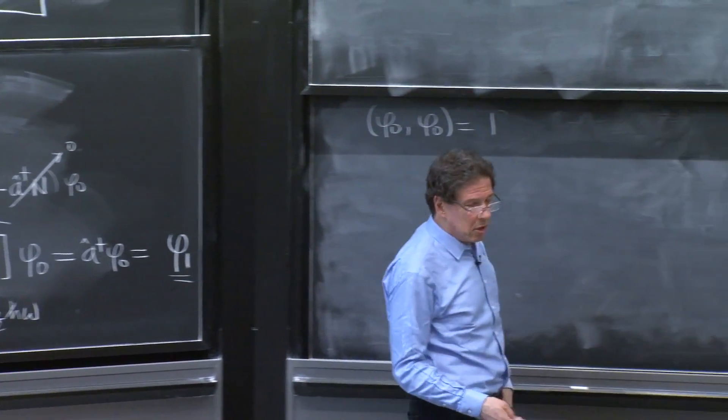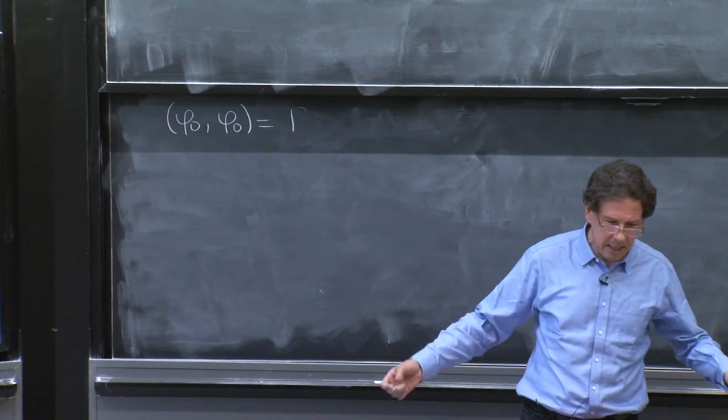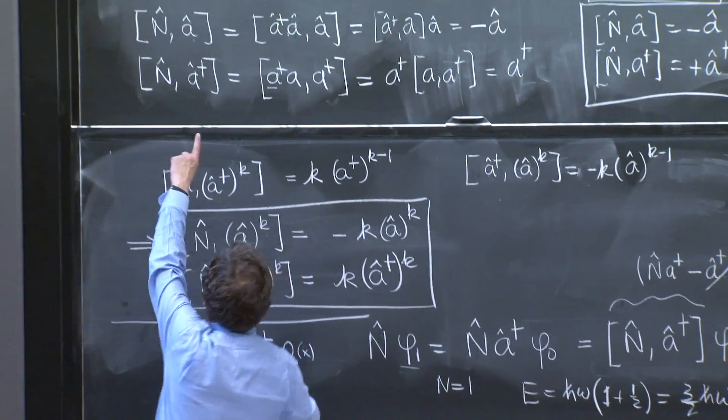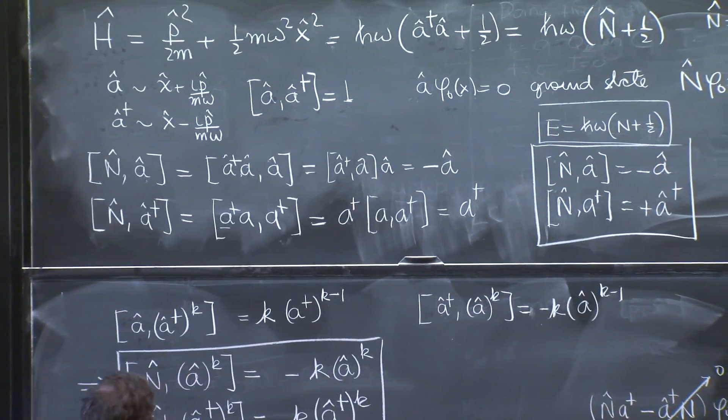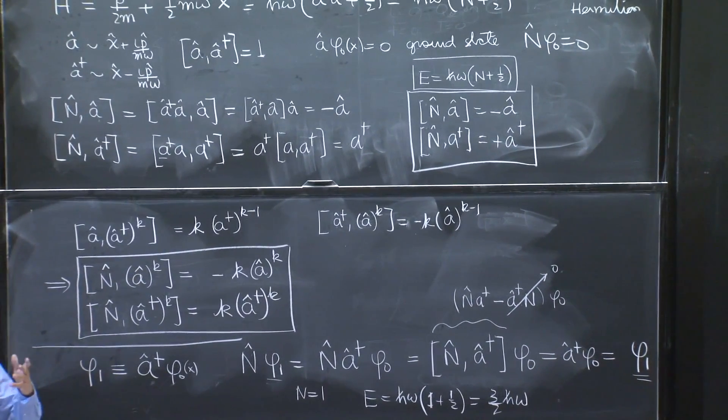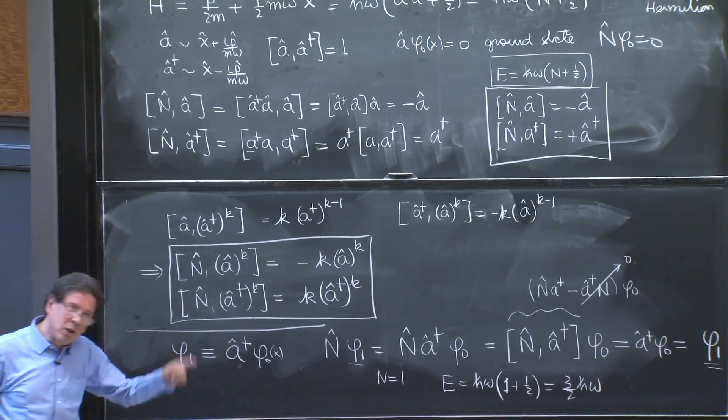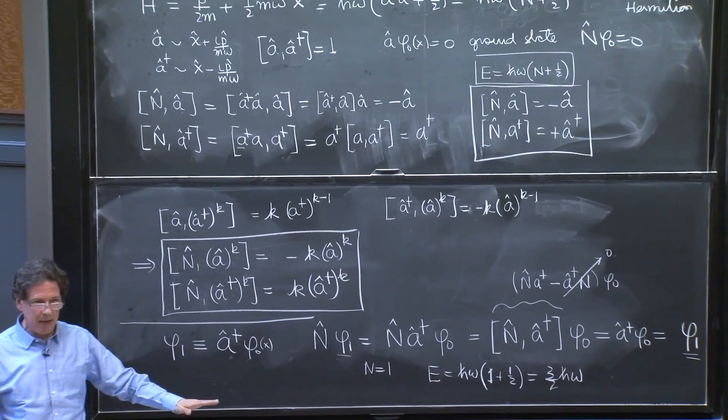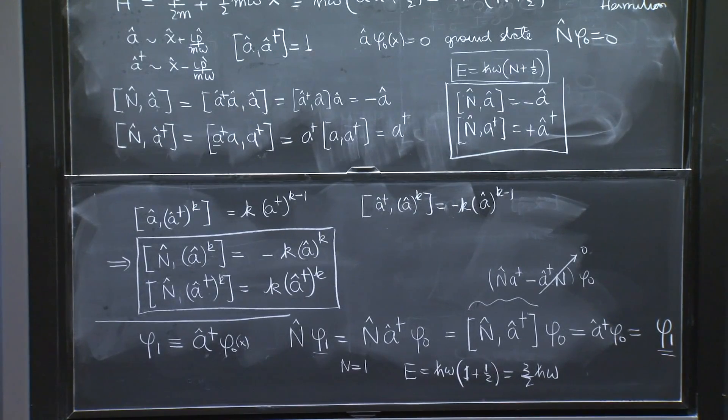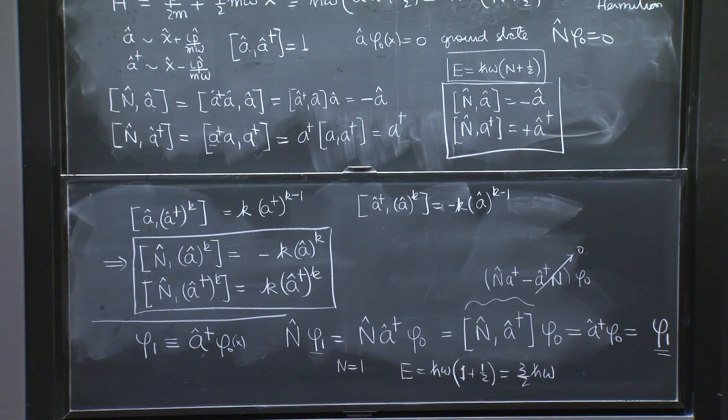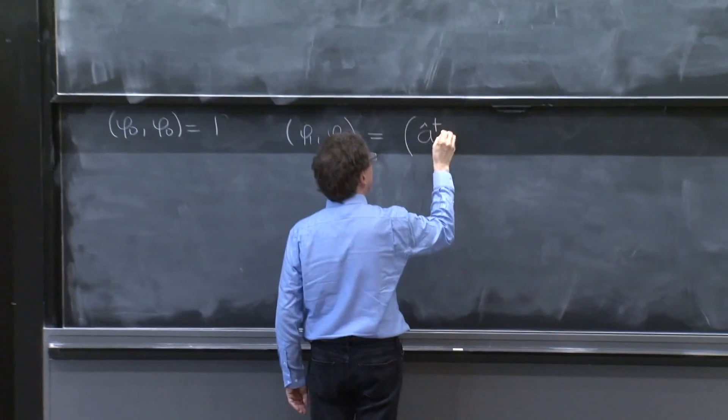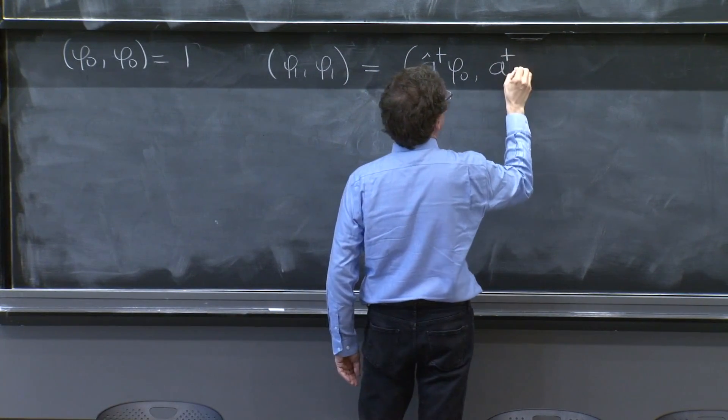So I'll try it. And now you could say, oh, this is going to be a nightmare. Normalizing phi_0 is difficult. Now I have to act with a dagger, which means act with x, take derivatives. It's going to grow twice as big. Then I'm going to have to square it and integrate it. It looks very bad. The good thing is that with these a's and a daggers, you don't have to compute anything, pretty much. See how we do it. I want to know how much is phi_1 with phi_1. Is it 1 and it's normalized or not? Then I say, look, phi_1 is a dagger phi_0, a dagger phi_0.